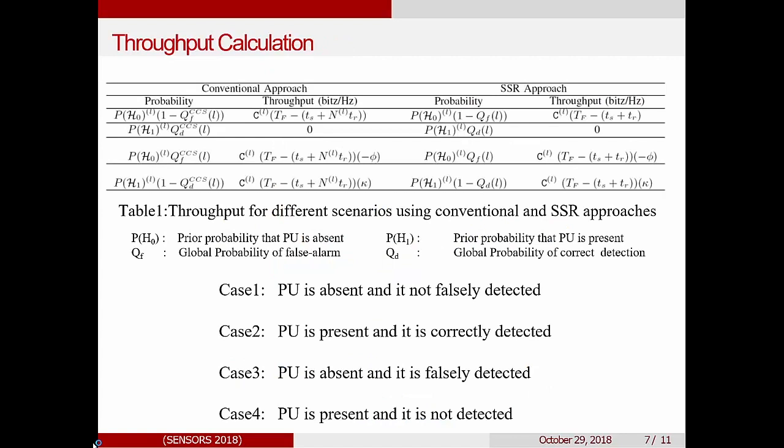Now once we get our required matrix, we need to calculate the throughput. So basically there are four cases. One when your PU is actually present and it is not falsely detected. This is the case we get maximum throughput. Second, when your PU is present and it is correctly detected. This is the case when you will not transfer your data. So your throughput is zero. The third is the case when your PU is absent and it is falsely detected. In this case, even though your channel is not being used, you are not sending data. So we impose a penalty.